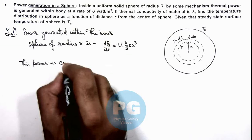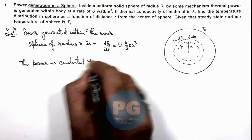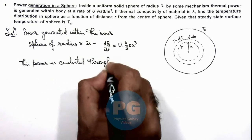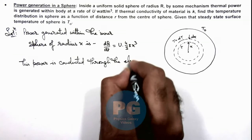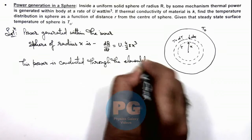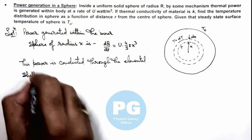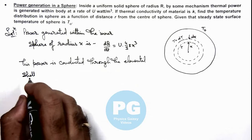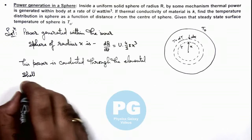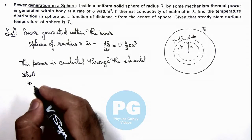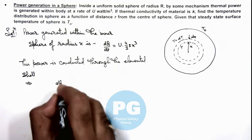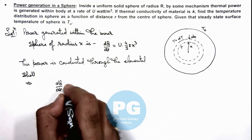is conducted through the elemental shell. So if this is conducted through the elemental shell, this implies here we can write this dQ/dt should be equal to: